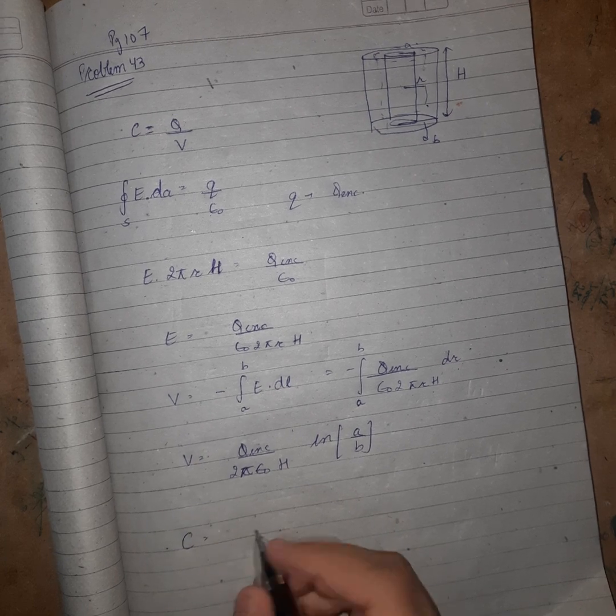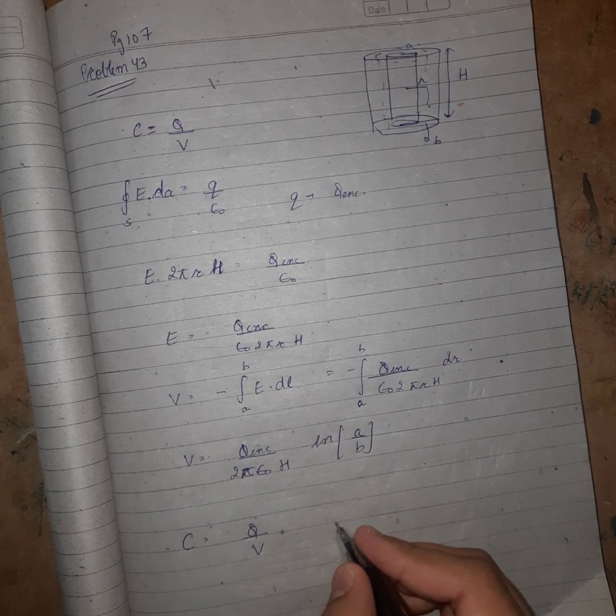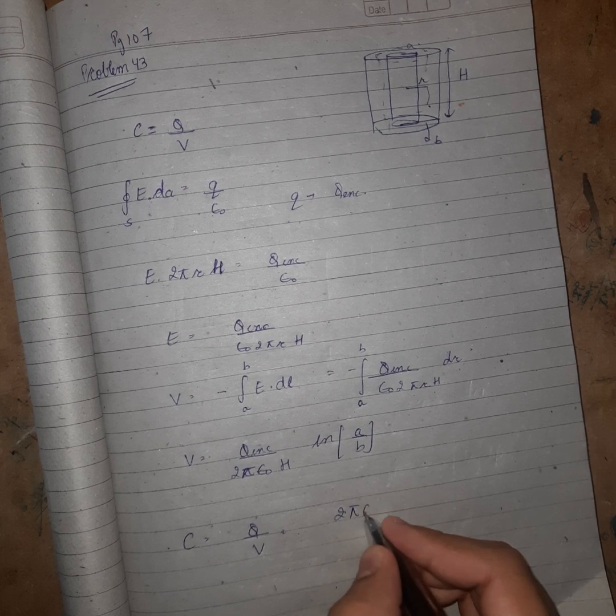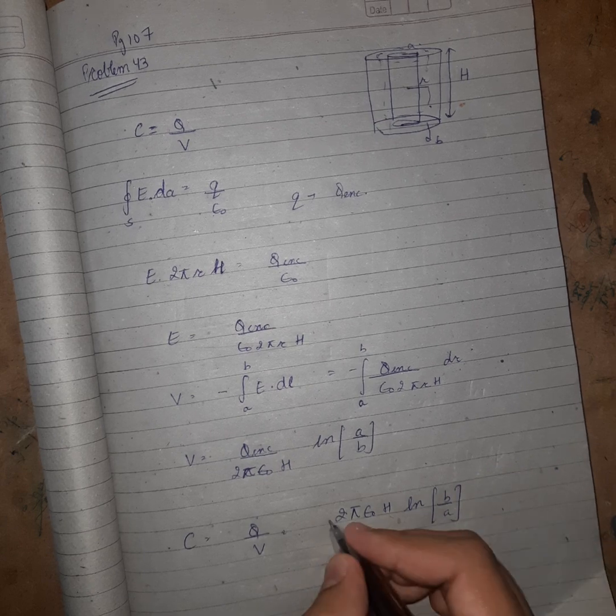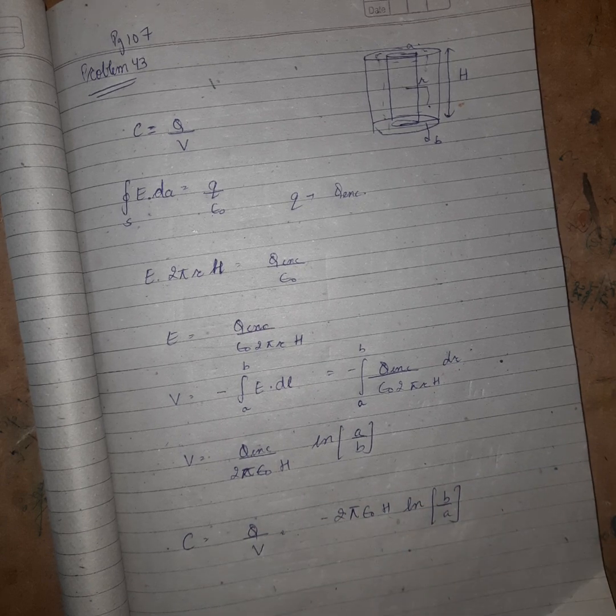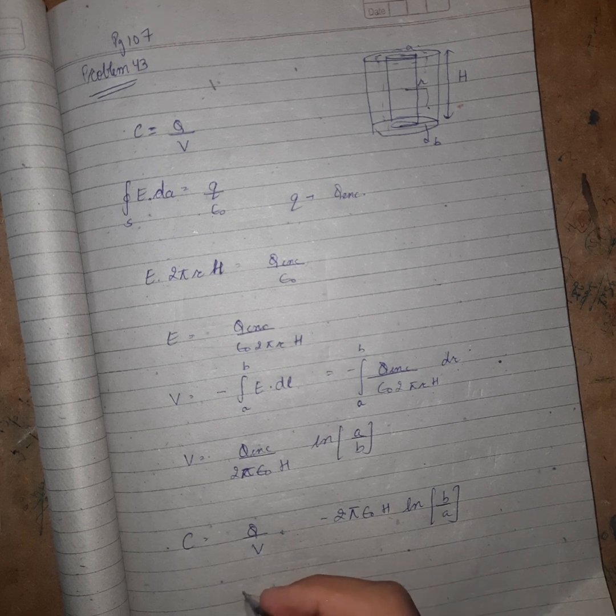So now we need C, so capacitance is Q upon V. So I get capacitance as 2πε₀h upon ln(b/a), taking the magnitude. Now I need capacitance per unit length.